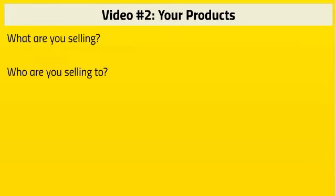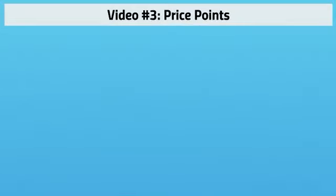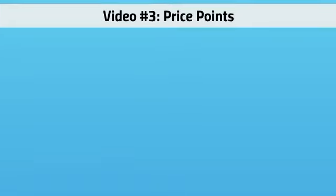If you think about exactly the step-by-step process of how you're distributing your content, your membership blueprint will begin to evolve. Think about how many products you're including — are you including one product, several one-time offers, back-end offers they can buy later to increase your lifetime customer value? You really need to think about these things, because if you buy a membership script and try to set things up without thinking about them, your business model might be totally different than somebody else's. I just want to cover those three points — and now in video number three we're going to talk about price points.